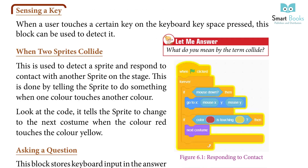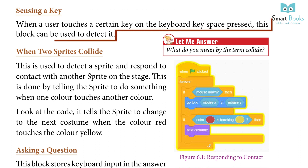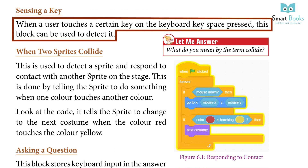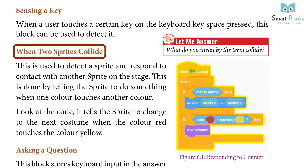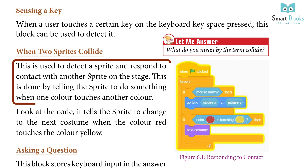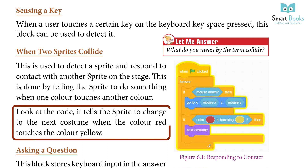Sensing a key: When a user touches a certain key on the keyboard (key space pressed), this block can be used to detect it. When two sprites collide: This is used to detect a sprite and respond to contact when another sprite is on the stage. This is done by telling the sprite to do something when one color touches another color. For example, the code tells the sprite to change to the next costume when the color red touches the color yellow.